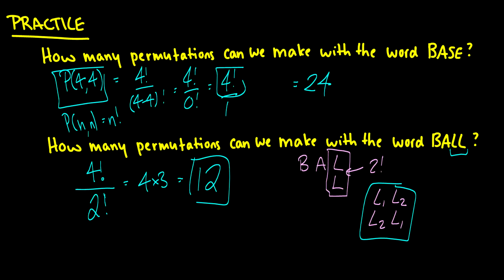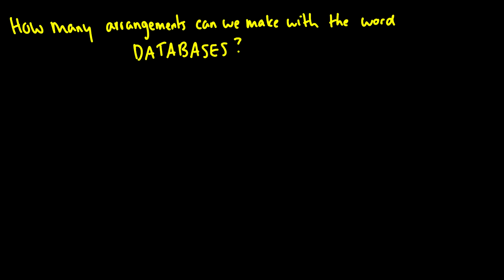Don't worry if that didn't make sense — we have a lot more examples in this video and the following video. So let's do a bigger example: how many arrangements can we make with the word 'databases'? First, list all the different letters: D, A, T, B, S, E. We have 3 A's and 2 S's. Let me go through: D-A-T-A-B-A-S-E-S.